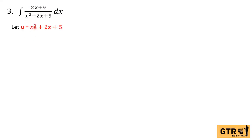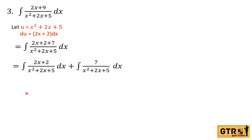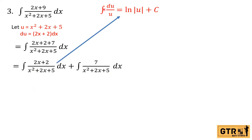So if we let u = x² + 2x + 5, then du = (2x + 2) dx. So let's break the numerator into (2x + 2) + 7. So we regroup this to get: the integral of (2x + 2) over (x² + 2x + 5) dx, plus the integral of 7 over (x² + 2x + 5) dx. For the first part we will use the formula — the integral of du over u equals ln|u| + C.